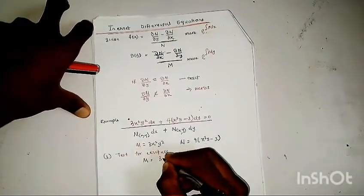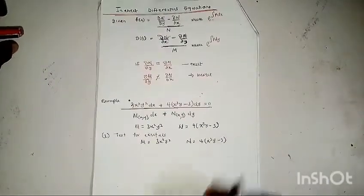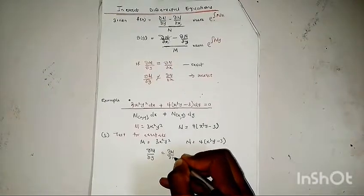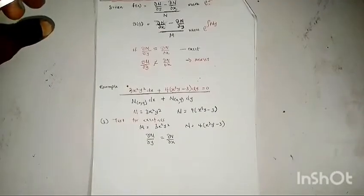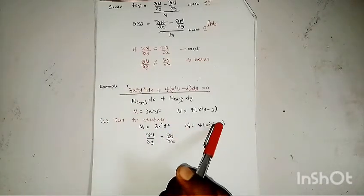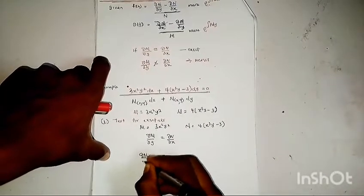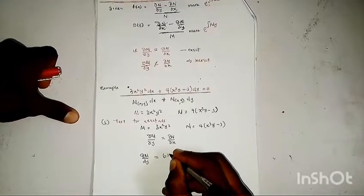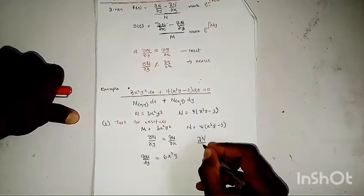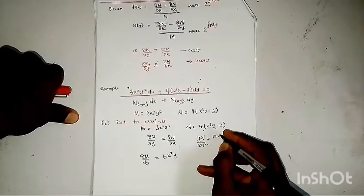Given M = 3x²y² and N = 4(x³y − 3). To test if an equation is exact, we said ∂M/∂y must equal ∂N/∂x. Differentiating M with respect to y, ∂M/∂y = 6x²y. Now differentiating N with respect to x, ∂N/∂x: differentiating 4x³y with respect to x gives 12x²y, and differentiating the constant −3 gives 0.